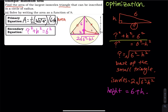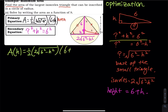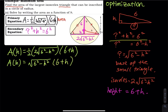The primary is A as a function of H. A of H equals one half times two times the square root of six squared minus H squared, times six plus H — only one variable, so we are ready to move on. A of H equals the square root of six squared minus H squared times six plus H.